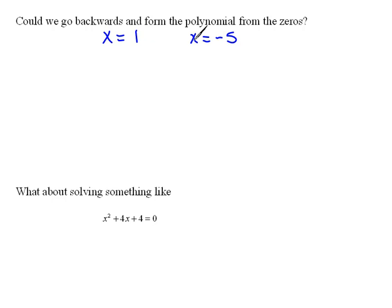Then we would say, okay, well, we're just going to go backwards. We're going to move this 1 over, so that would be x minus 1 equals 0, and x plus 5 equals 0. And then again, going backwards, if this is equal to 0 and this is equal to 0, then when I multiply them together, that would also have to be equal to 0.